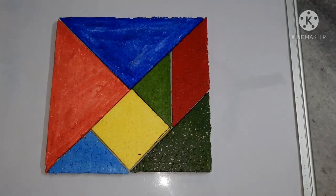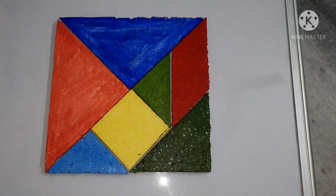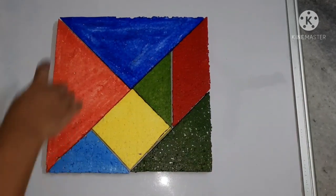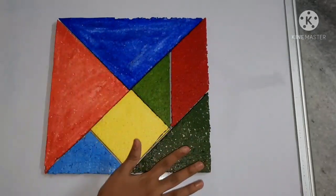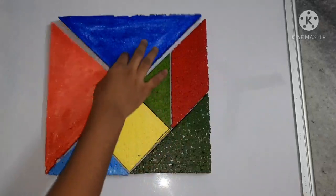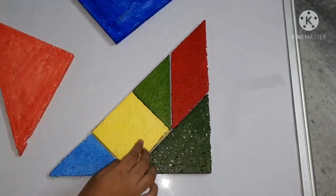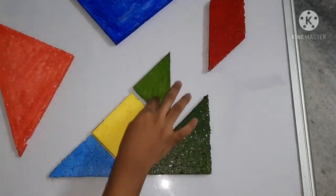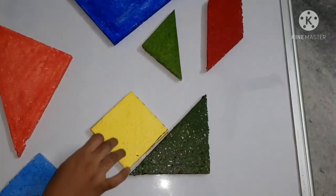A tangram is a Chinese geometrical puzzle that is a square cut into seven different pieces. There are two large triangles, one parallelogram, two small triangles, a square, and a medium triangle.